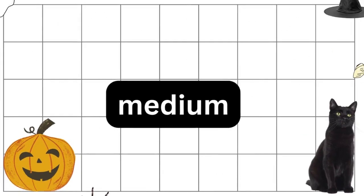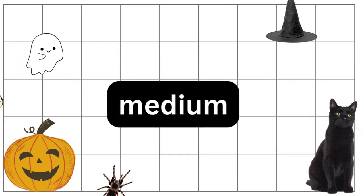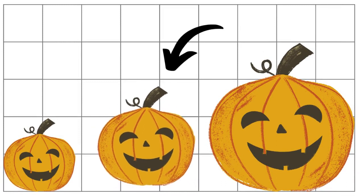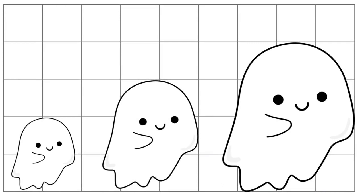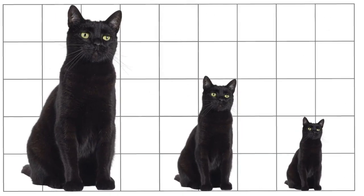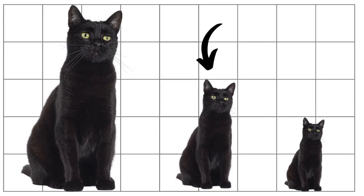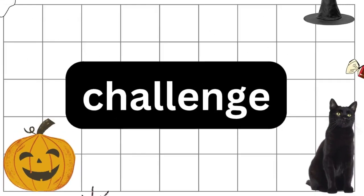Now we will look for the size medium. It won't be the biggest item and won't be the smallest. Find the size medium next. Here is the medium one. Here is the medium one. Here is the medium one. Here is the medium one. Here is the medium one.